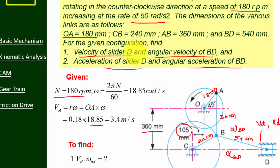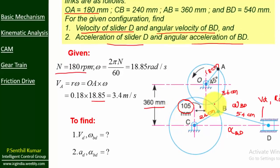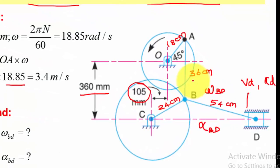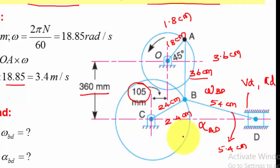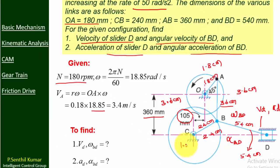Let us draw the configuration diagram. It is very difficult to draw 36 cm, 24, 18, and 54 cm on an A3 sheet. So we assume a scaled representation: 36 cm as 3.6 cm, 18 as 1.8 cm, 24 as 2.4 cm, 54 as 5.4 cm. Similarly, the horizontal distance of 36 cm becomes 3.6 cm, and 105 mm becomes 1.05 cm.